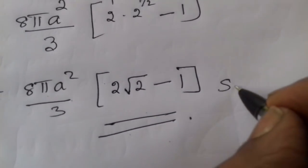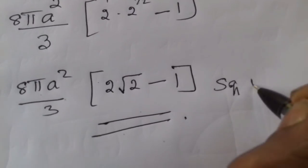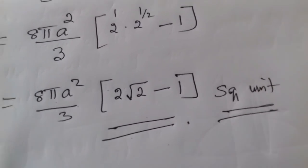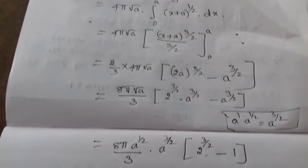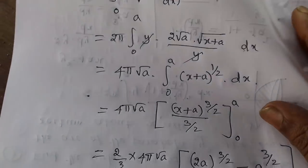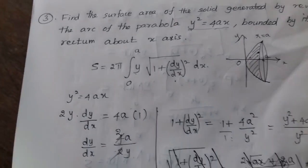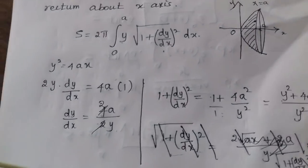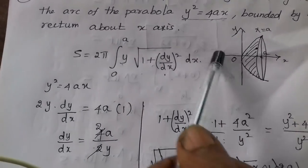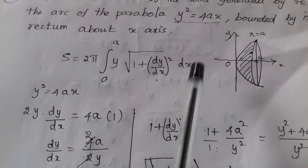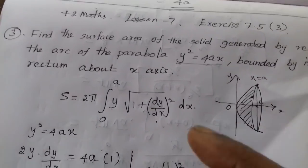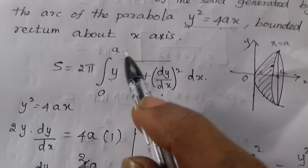Okay, remember to put in the square properly. Thank you students — if you have any problem, put it in the comments. The formula for y² = 4ax and the surface area of revolution formula are the key steps in this problem.